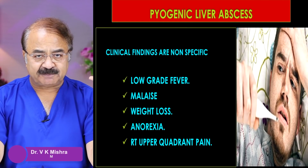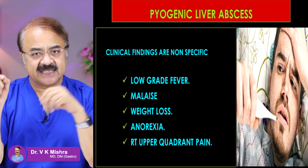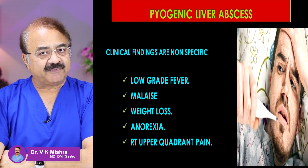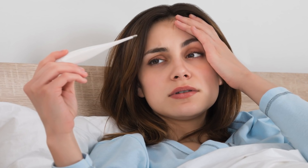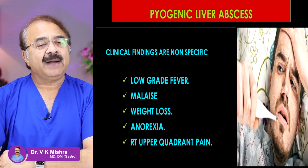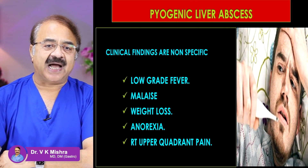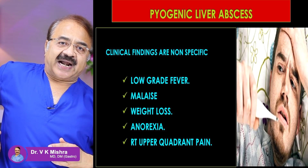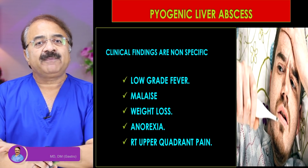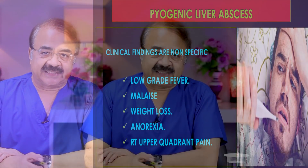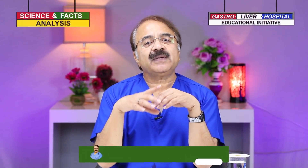If we look at symptoms carefully, they will be non-specific in the beginning — low-grade fever of around 99°F, body aches or malaise, gradual weight loss, and a gradual disappearance of appetite. Slowly, pain begins in the right side of the body where the liver is located.